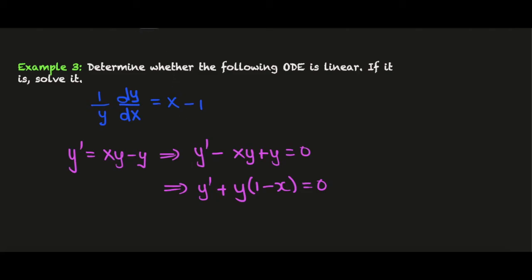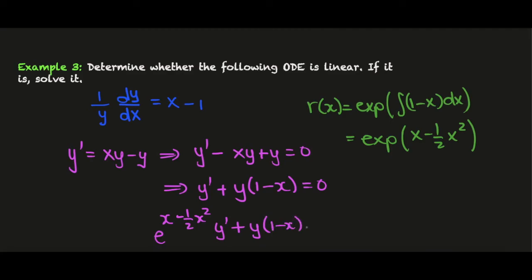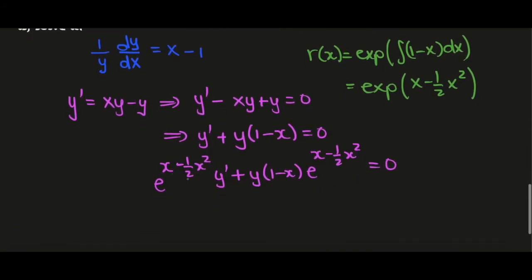Now the integrating factor here is going to be r(x) equals exponential of the integral of 1 - x dx, and the integral of 1 - x is just x minus 1/2 x squared. From this, I'll write this as e to the x minus 1/2 x squared times y' plus y(1 - x)e to the x minus 1/2 x squared equals 0. Even though this looks rather complicated, the point is that we could write this as just (e to the x minus 1/2 x squared times y)' = 0.